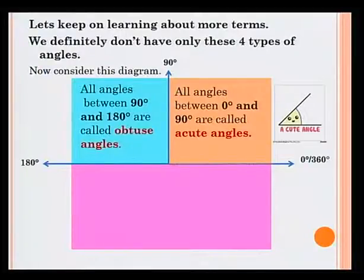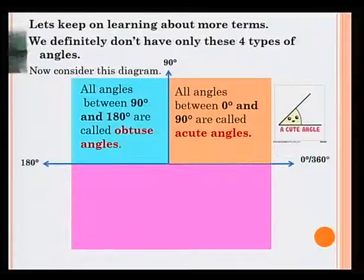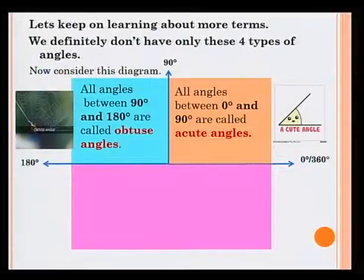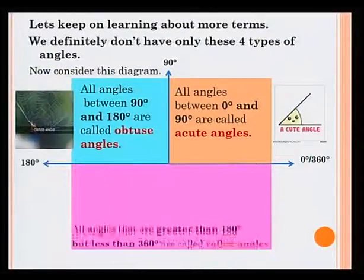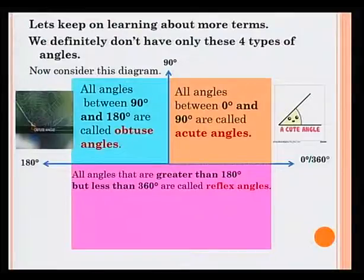All angles between 90 degrees and 180 degrees are called obtuse angles. Now the third region: all angles that are greater than 180 degrees but less than 360 degrees are called reflex angles.